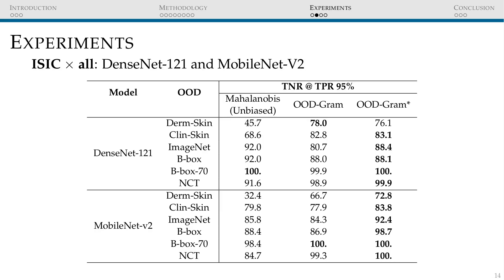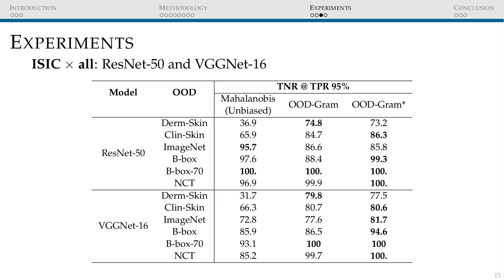As we can see, the Gram-OOD-based methods achieve the highest average true negative rate at a true positive rate of 95%. Also, the extended method presents better performance than the original one. For ResNet and VGG, the results are similar to the previous ones. Observing the OOD data sets, the DERM skin is the most challenging one, as expected since it's the distribution closest to that of the training data. Regarding ImageNet, we expected a higher result, so this shows that this task is challenging and there is still room for improved performance.